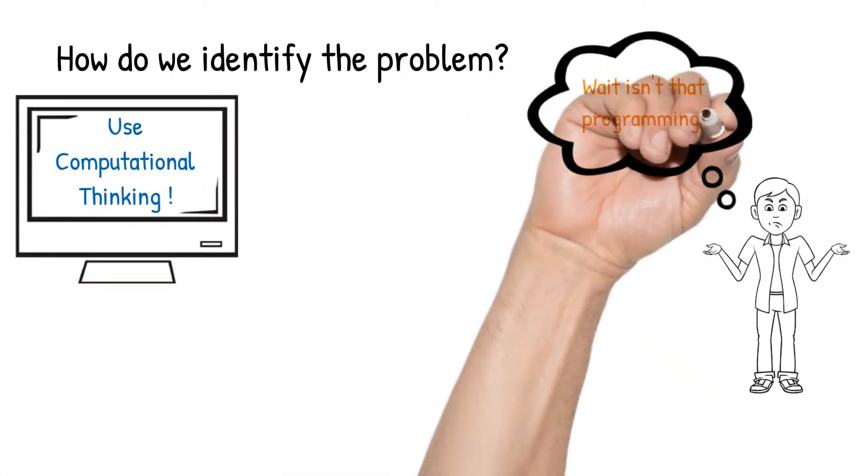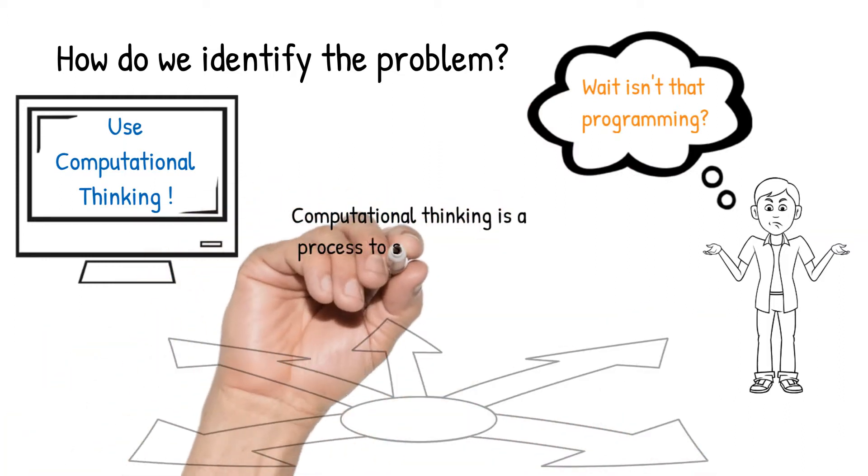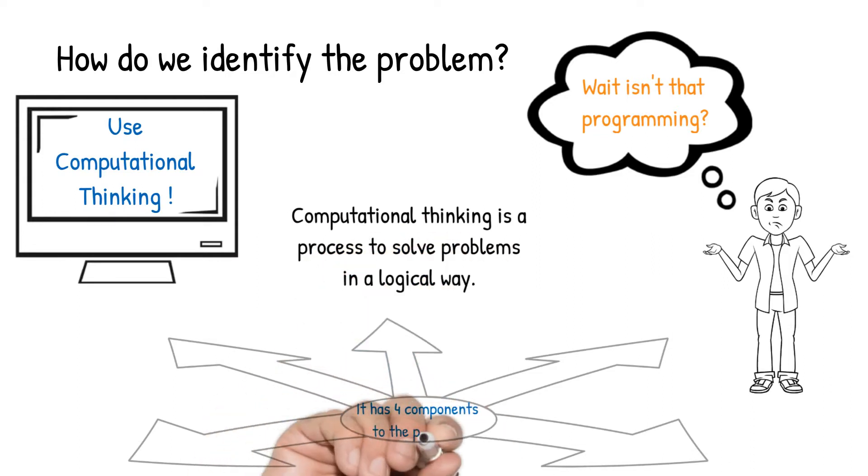Wait, isn't that programming? Computational thinking is a process to solve problems in a logical way. It has four components to the process.